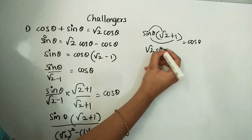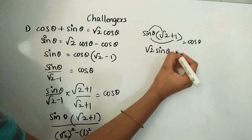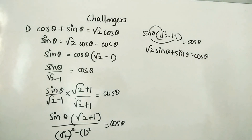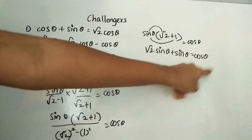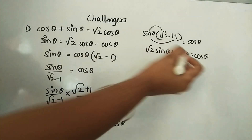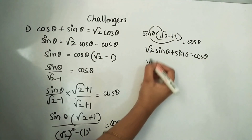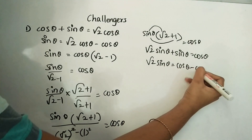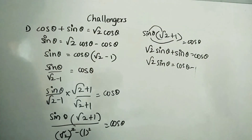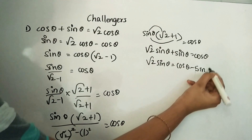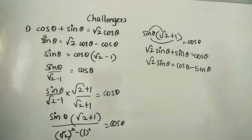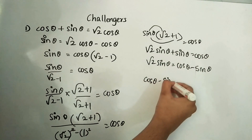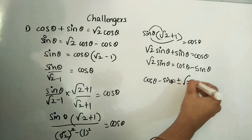Expanding: √2 sin θ + sin θ = cos θ. Now we send one sin θ to the LHS to get cos θ − sin θ. So √2 sin θ = cos θ − sin θ. What we had to prove is cos θ − sin θ = ±√2 sin θ, and we got the same thing. So it is proved.